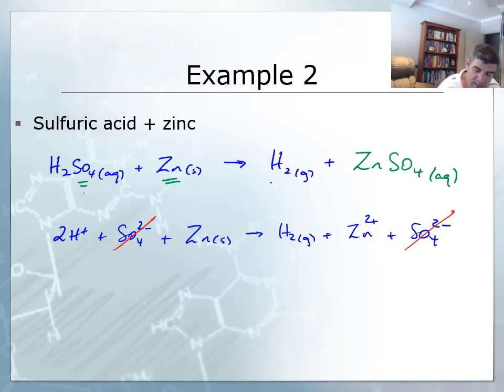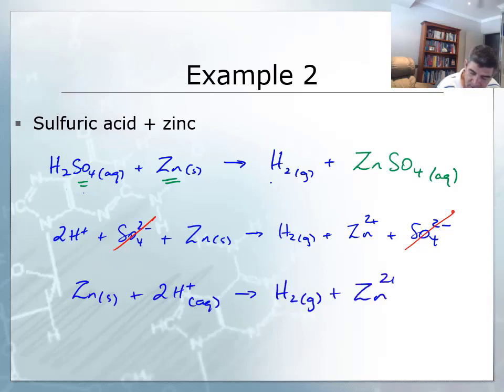As we saw before, the anion is the spectator ion in this case. So what we've got is a displacement reaction occurring as the zinc solid displaces the hydrogen ions from the solution, causing them to be released as a gas, and the zinc taking its place in the solution.